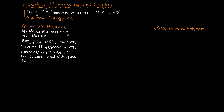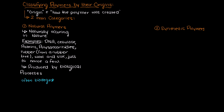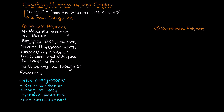These natural polymers are produced by biological processes and are often easily biodegradable. This is really cool as often these natural polymers can be used for making plastics that are biodegradable. However, in general there are limitations to these as they are often not as durable or strong as many synthetic polymers, and we cannot customize the polymer to have the properties that we want as easily.